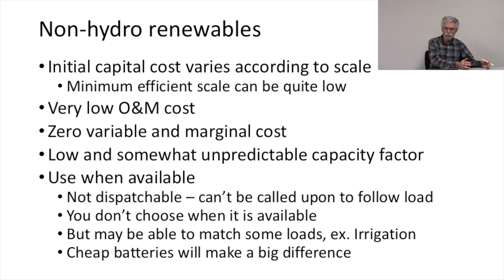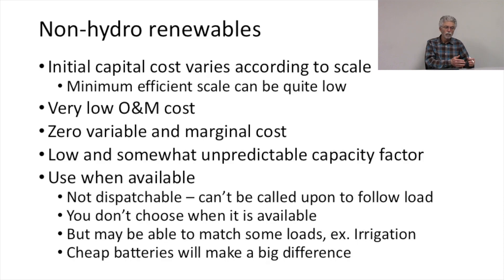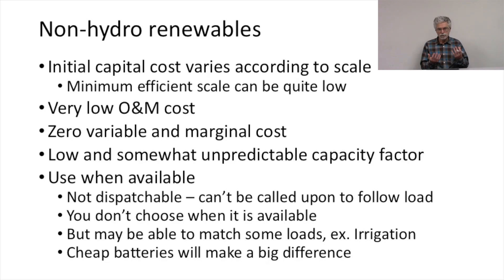Solar facilities are much more scalable, with a minimum efficient scale on the order of 10 megawatts or so. You could build a much smaller solar facility and have it be reasonably cost effective compared to a much larger one. There may be some economies of scale, but nothing like the economies of scale in larger baseload power plants. These facilities have very low operation and maintenance costs and zero variable costs. The cost of operating a wind turbine or a solar farm is zero once you have it in place — once the sun or wind is there, there's simply no cost of operating the facility. This zero marginal cost is a really important characteristic of renewables.